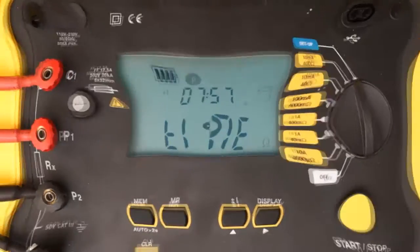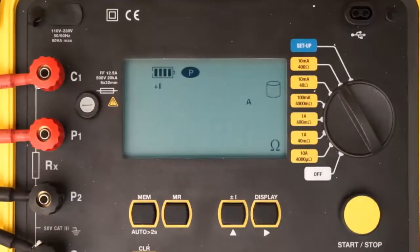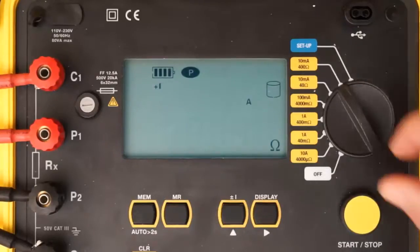When the configuration is set, you are ready to take a resistance measurement. If the resistance you are testing is unknown, we suggest starting with the instrument's highest resistance range and then lowering the range until you obtain meaningful results. In our demonstration, we are using a shunt of known resistance, so we will turn the dial to the 10 amp 4000 micro-ohm setting.